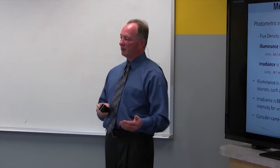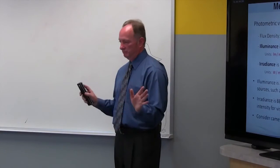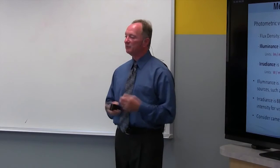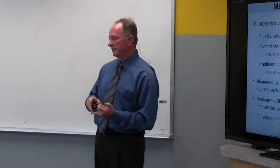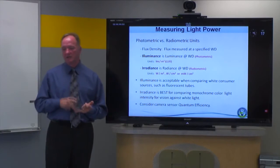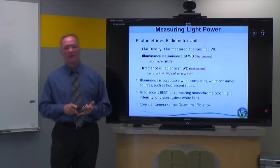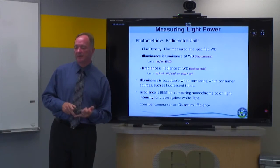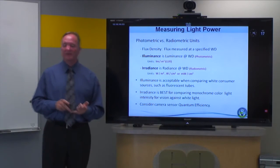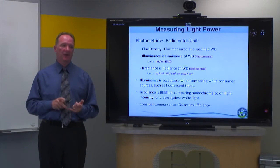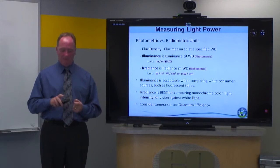Illuminance is an acceptable measure for comparing consumer sources like fluorescent tubes. Irradiance is better for machine vision because it's a radiometric unit — not biased based on the human eye — and is a better choice for comparing monochrome or monocolor light. You're still better off comparing reds versus reds, blues versus blues. And don't forget about your sensor efficiency.